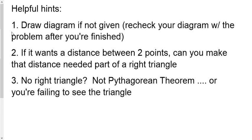A couple of helpful hints. Again, I mentioned you need to draw a diagram if it's not given. Do this because you're not going to see the words Pythagorean Theorem. You're not going to see anything talking about a right triangle. But if you can make the diagram, you'll be able to see it. And if that distance that you need is one side of that right triangle, it'll work out. If there's no right triangle, use a different strategy or you've set it up wrong.